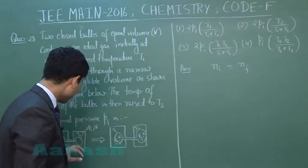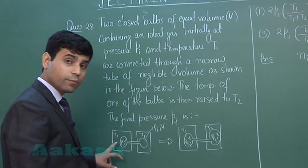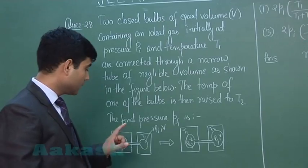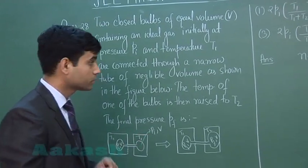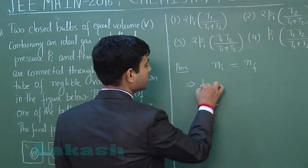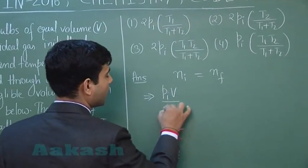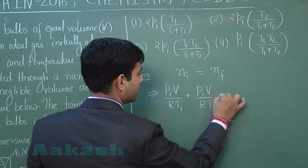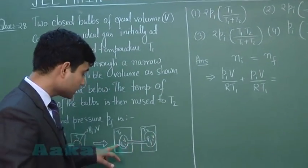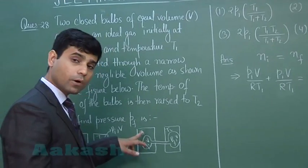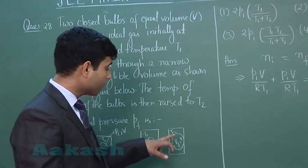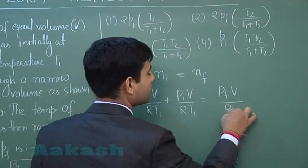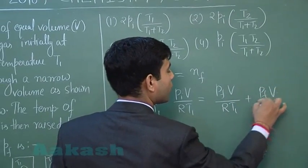In the initial condition we have 2 containers. In both bulbs, the number of moles is PV/(RT1) each, so initially total moles = PV/(RT1) + PV/(RT1). In the final case, one container has PF·V/(RT1) and the other has PF·V/(RT2), giving PF·V/(RT1) + PF·V/(RT2).